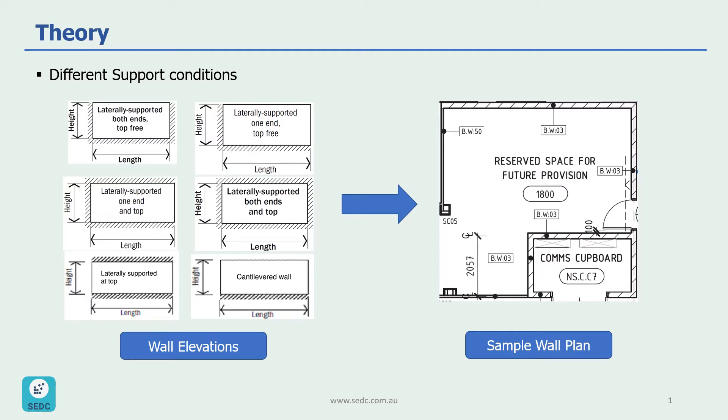At the first step, let's look at different support conditions for masonry wall design. We need to consider six support conditions for masonry walls, which depend on having either one or two support conditions at two vertical edges or at the top of the wall.